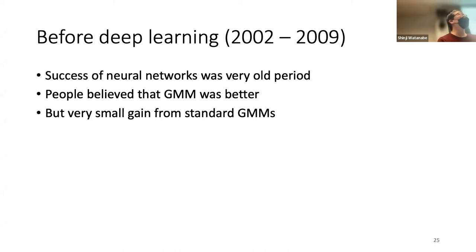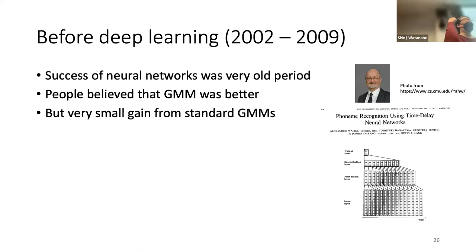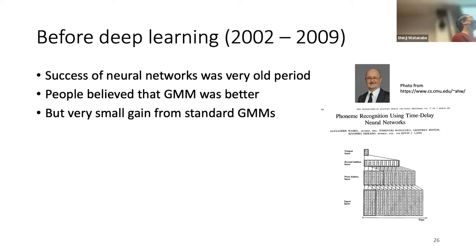At that time we didn't get improvements from neural networks due to the reasons mentioned. Professor Alex Weibel here, one of the most famous people in speech, proposed the time-delay neural network — a variant of convolutional neural networks — back in 1989 and showed significant improvement. But at that time we couldn't scale it to large problems, and people gradually moved back to GMM-HMM.